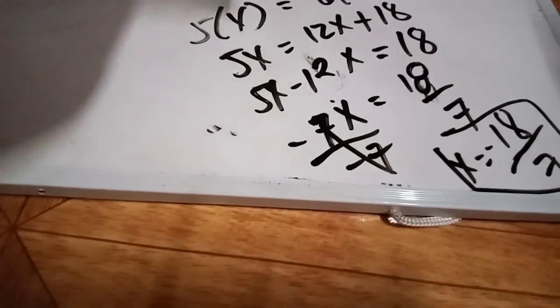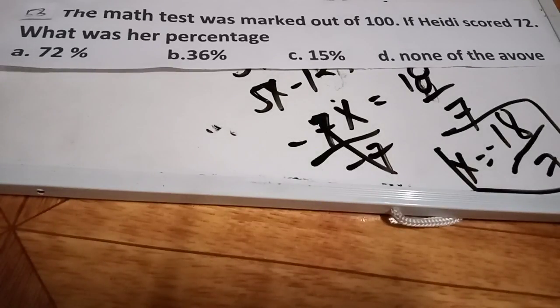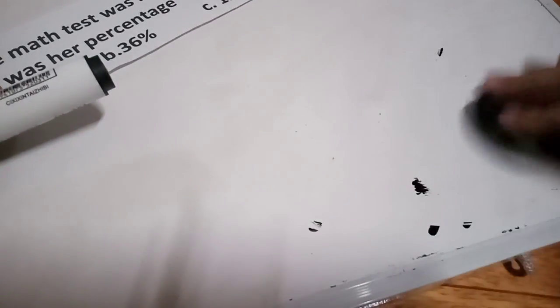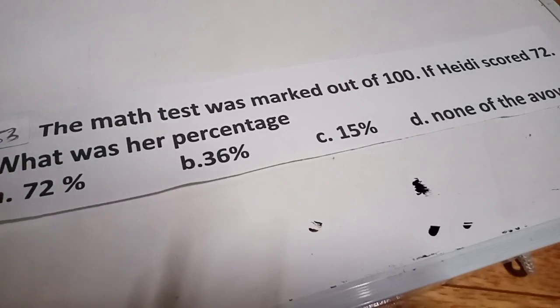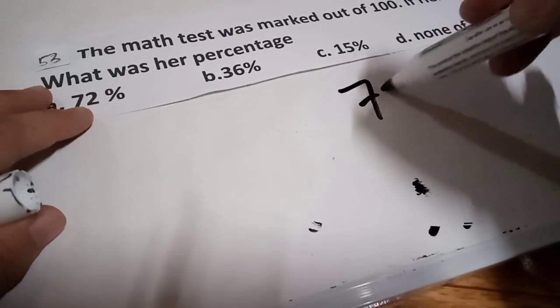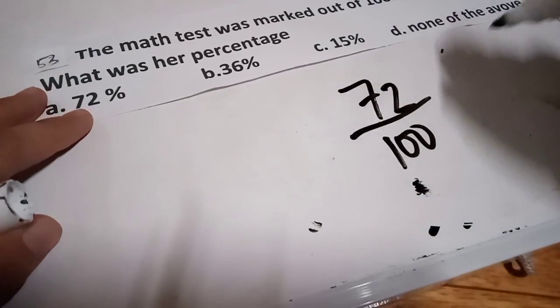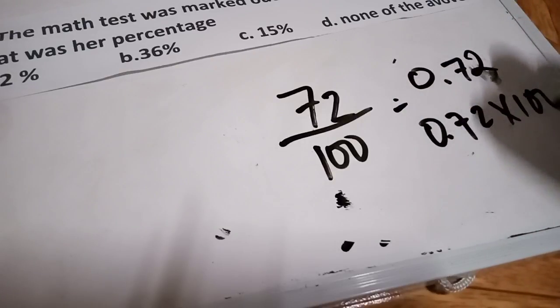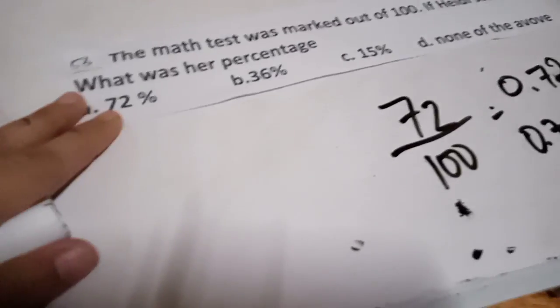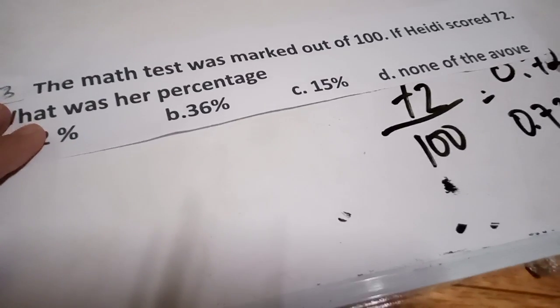For number 53: the math test was marked out of 100. If a student scored 72, what was her percentage? Since the score is 72 out of 100, we move the decimal two places: 0.72 times 100 percent equals 72 percent. The answer is 72%, which is letter A.